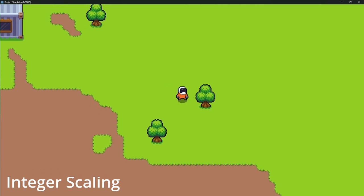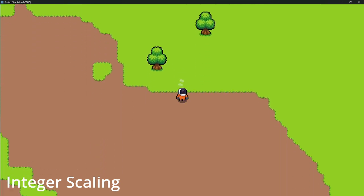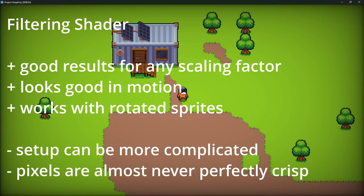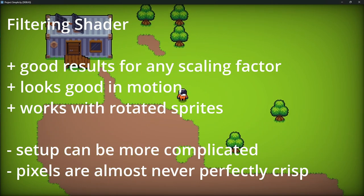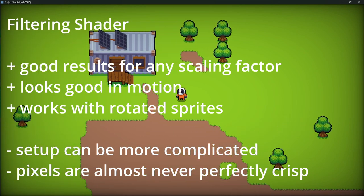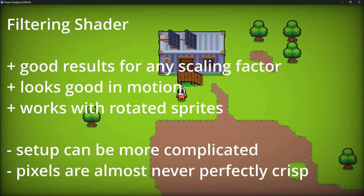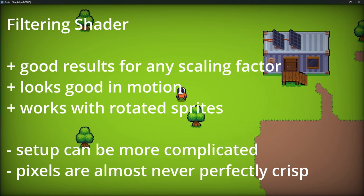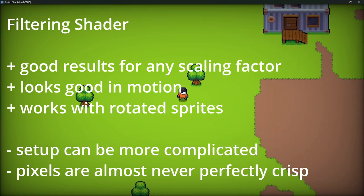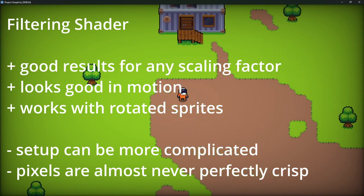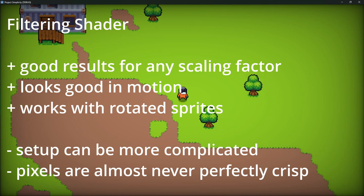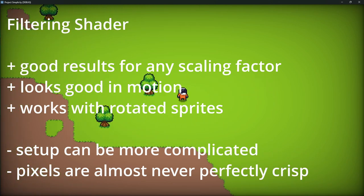If you are interested in seeing a detailed guide on setting up perfect integer scaling, let me know in the comments. But now let's look at the filtering shader method. On the pro side, it produces good results for any pixel scaling factor, even fractions. It looks good in motion, and it works with rotated sprites. On the con side, setup can be a bit more complicated — you will need to make sure to apply the shader material to every object, and every time you create a new one, you need to think of this. Also, pixels are almost never going to be perfectly crisp. But still, overall, I think the filtering method is slightly better than scaling by an integer factor, so this is what I'll show you.